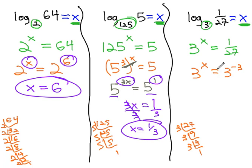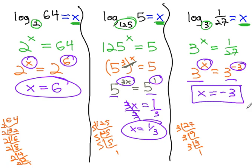And 3 to the x, we said it was prime. We couldn't do anything with it. But again, we've got the same base on both sides, so the exponents must be equal. X must equal negative 3. And because we said x was equal to the logarithm, we know that log base 3 of 1 over 27 equals negative 3.